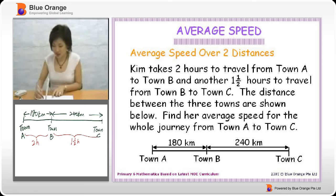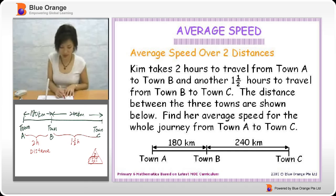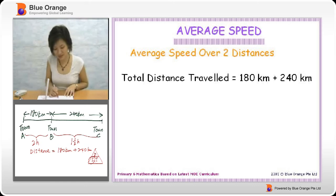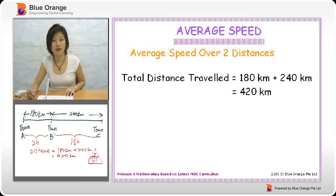Now ask yourself, what do we do when we are looking for speed? We are looking at distance over time. Do you know what the distance that Kim covered from A to C? The distance would be 180 kilometers plus 240 kilometers. That will be 420 kilometers. And then we are looking at the time, because what we want is distance over time, distance divided by time.